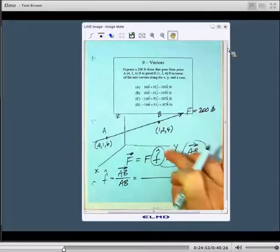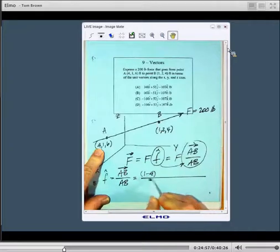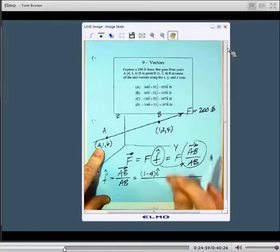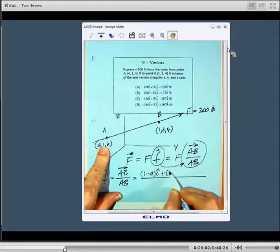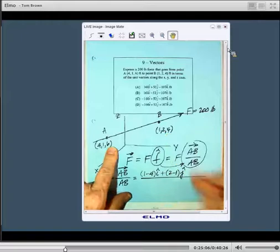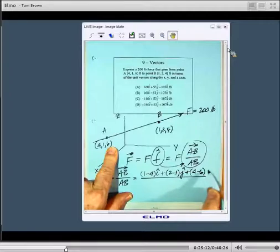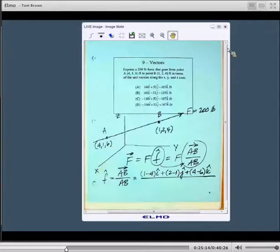So what we have is 1 minus 4, i, and we got 2 minus 1, j, and then we got 4 minus 6, k. So 1 minus 4 i, 2 minus 1 j, 4 minus 6 k.